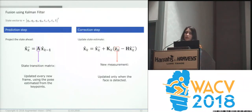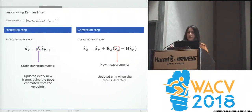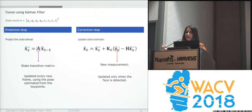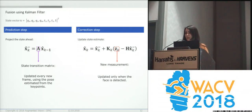At the Kalman filter, we represent the state vector which contains the orientation and the location of the head. The rotation is represented with quaternions. For the prediction step, we integrate the head pose estimated from the key points by updating the state transition matrix every frame with the head pose. While in the correction step, we use the head pose from the facial landmarks as the new measurement.